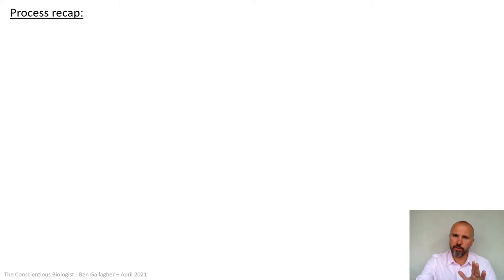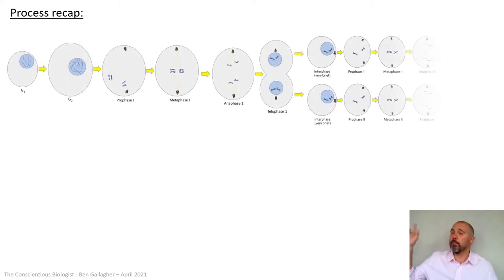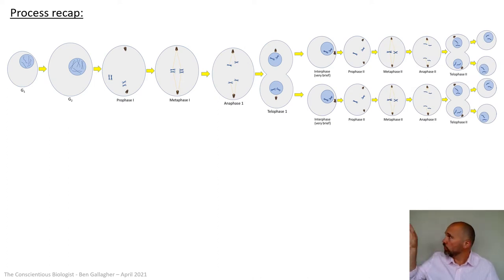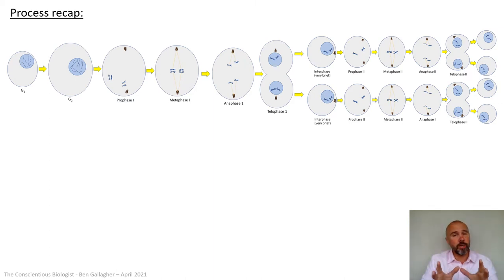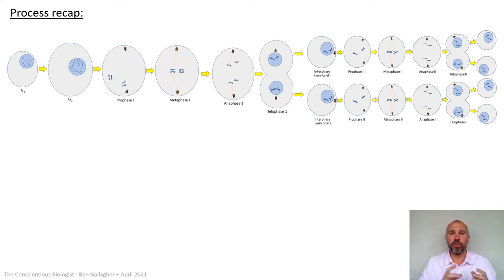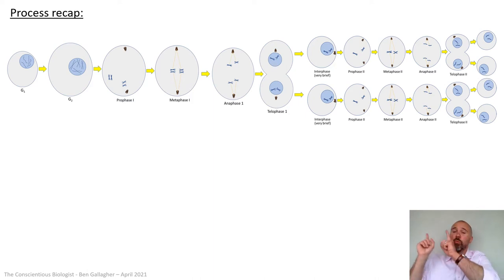It's really important that you've watched the previous video first on the full process, but just to very quickly recap: this is the diagram from the previous video of the entire process. Starting in interphase, you've got G1, then semi-conservative replication to turn single chromosomes into double chromosomes, then G2 - those are all interphase. Then meiosis one begins with prophase one. Remember, it's really important in meiosis to put the one or two after prophase, metaphase, anaphase, otherwise it will appear to be mitosis.